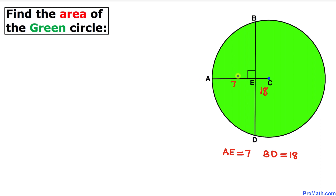Welcome to Premath. In this video tutorial we have got this green circle with chord BD of 18 units, AC is our radius, line segment AE is 7 units, and the angle between this radius and this chord is 90 degrees. We are going to find the area of this green circle.